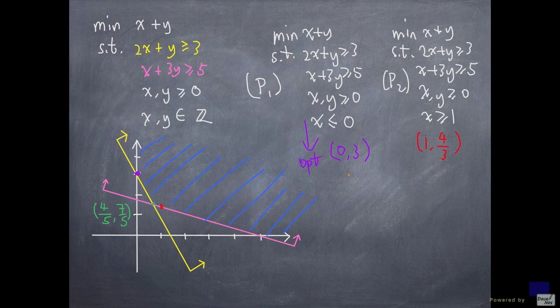Now, notice that 0 comma 3 is a feasible solution for the original problem, because both are integers. And the objective function value of this solution is 3, right? 0 plus 3 is 3. And if we look at P2, x is now an integer, but y is not.